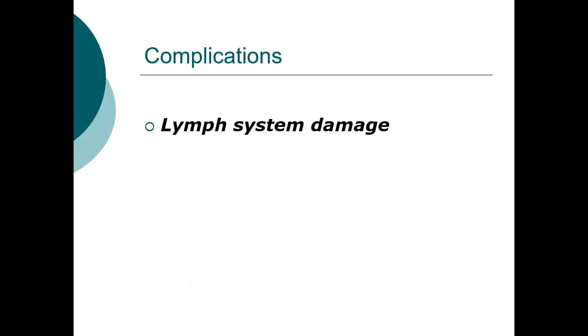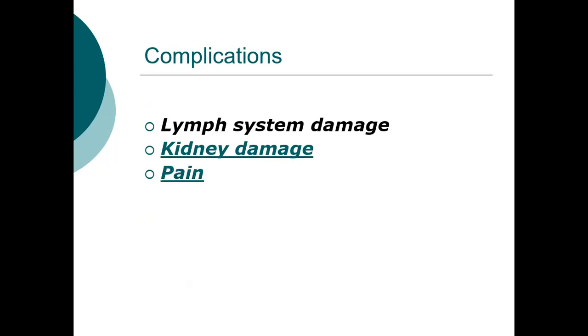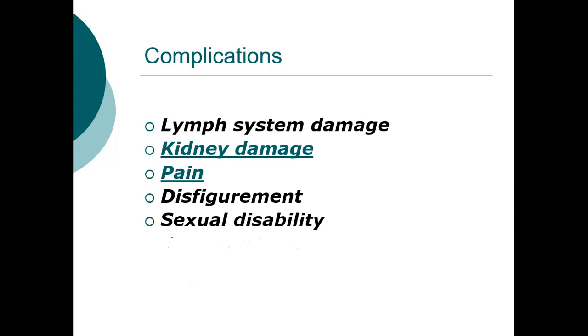Complications of elephantiasis include lymph system damage due to invasion of the lymphatic system by the filarial worm, kidney damage due to impaired lymph circulation and blockage of filtration, pain from affected structures, disfigurement due to abnormal enlargement of invaded structures, sexual disability due to enlargement of the scrotum, and social rejection due to abnormal enlargement of body structures. That concludes our lesson on managing elephantiasis as a tropical condition. Thank you for taking time to go through the lesson.